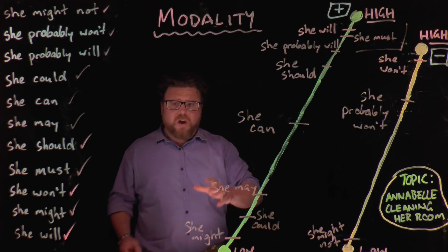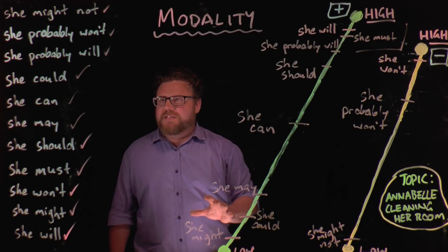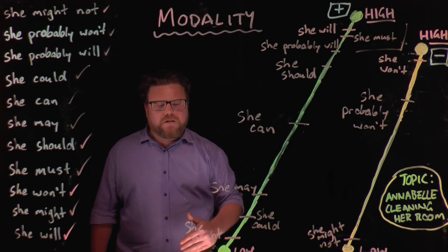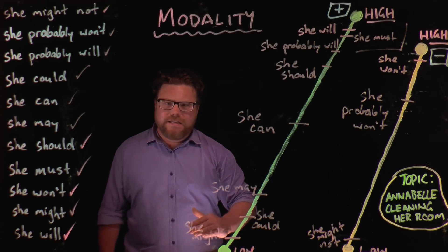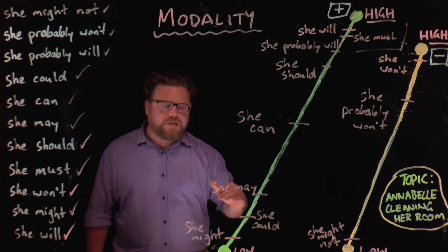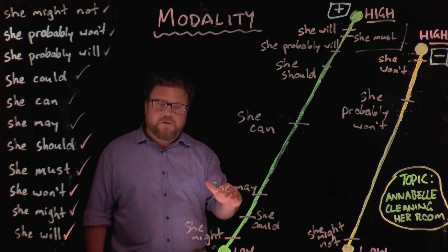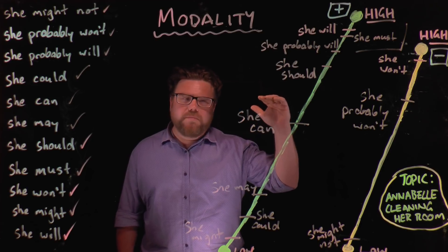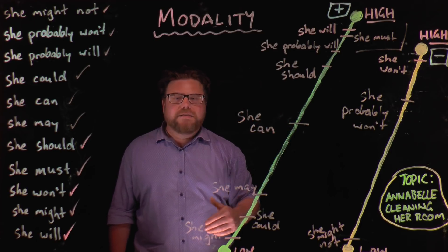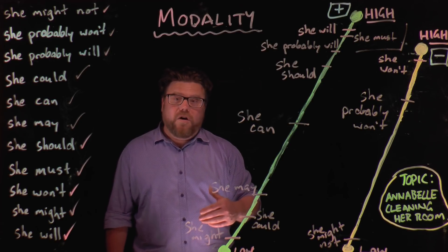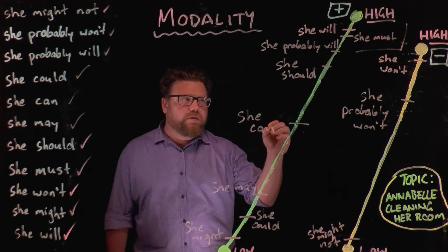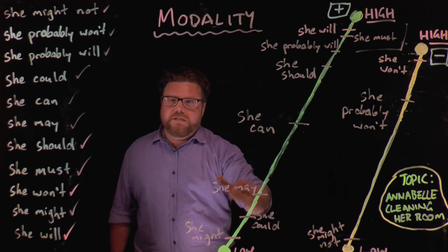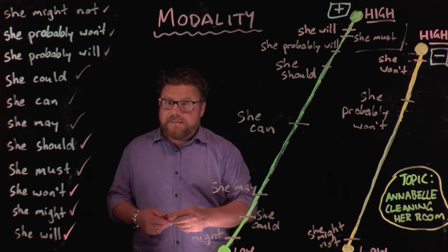As I said, there are no hard and fast rules. To some degree, it's up to you how you scale these. But as long as you recognize that there are some clear low modality ways of describing things — like 'she might' or 'she might not' — and some clear high modality ways — like 'she will,' 'she must,' or 'she won't' — then as long as you understand that it's all about the degrees of certainty or obligation, you understand modality in language.